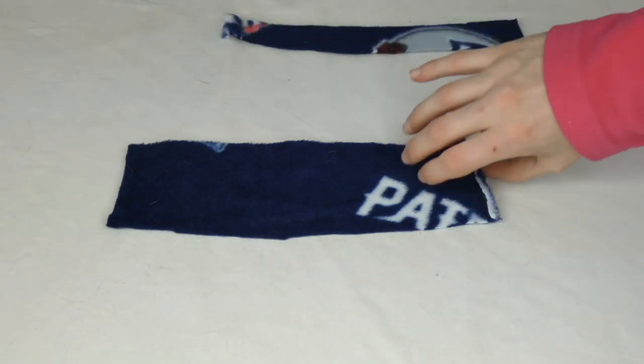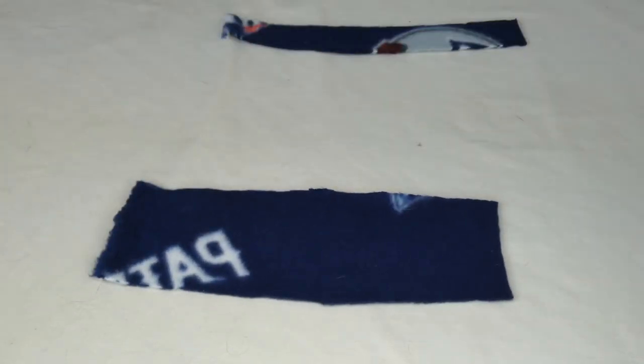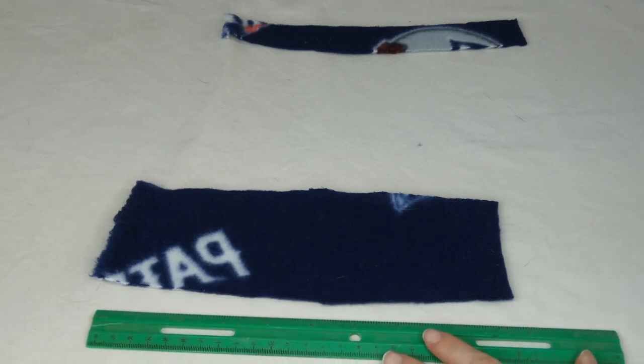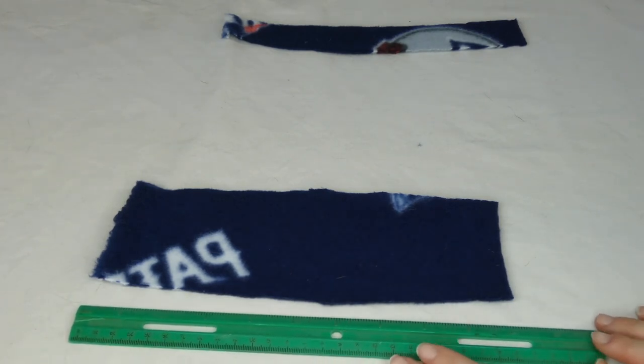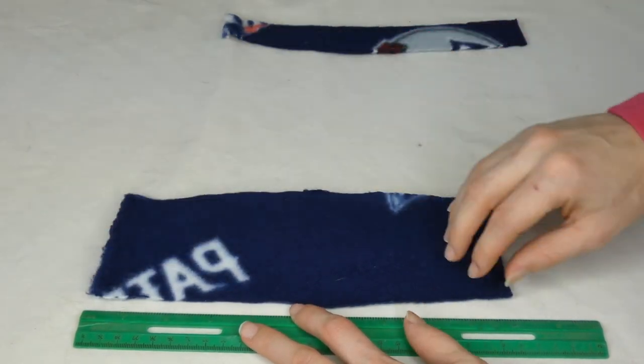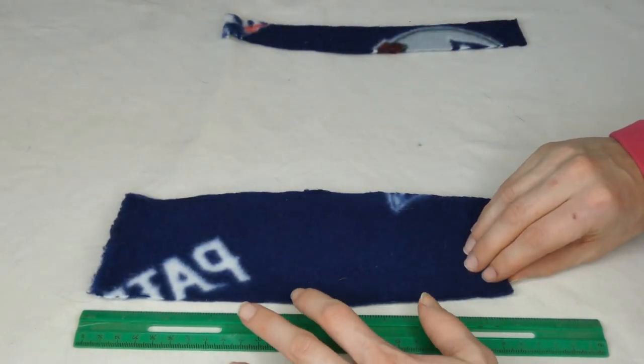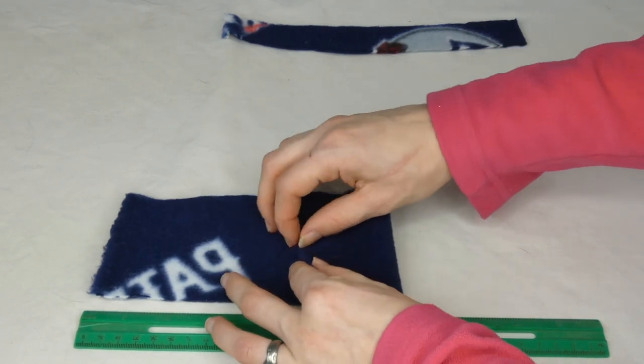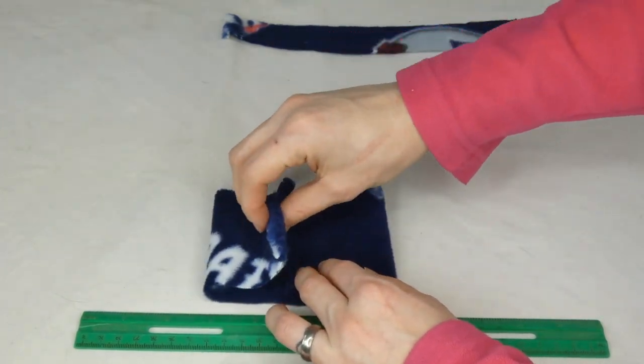I'm going to start with my larger piece, and what you want to do, I have a ruler here, and I'm going to find the center of my piece, which would be 5 inches. So that would be right here. I'm going to fold each piece into the center.